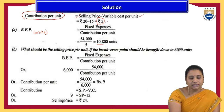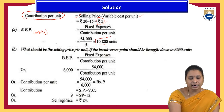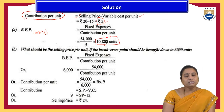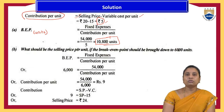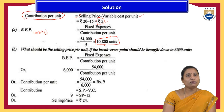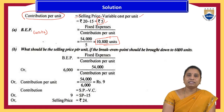That equals 10,800 units. So if the organization sells 10,800 units of goods, there will be no profit and no loss for the organization.